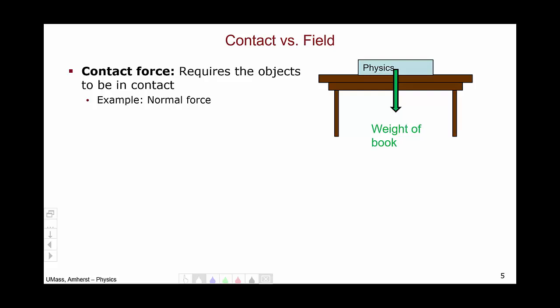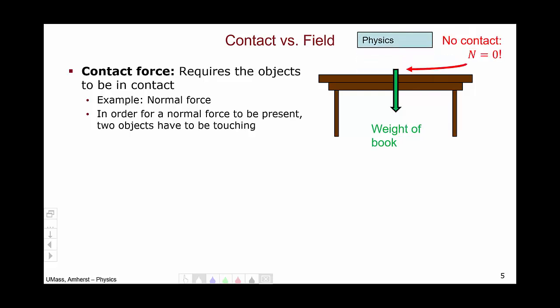The weight of gravity tends to pull the physics book down through the table. Of course, the book doesn't go through the table because there's a normal force from the table on the book counterbalancing the force of gravity. In order for this normal force to be present, the two objects must touch. If I raise the physics book, the two objects are no longer in contact and the normal force goes to zero.